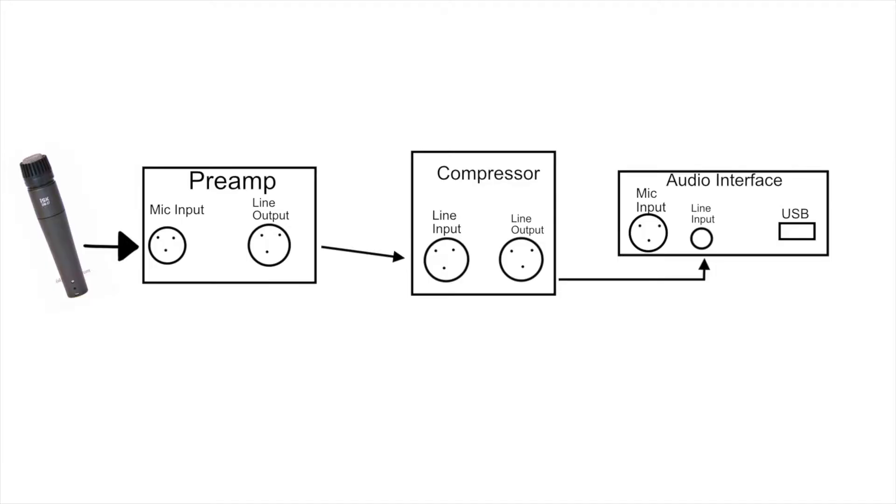If you have an external effects unit you want to use, it needs to receive a line level input and will send a line level output. So if you're recording with a microphone, you'll need to go from the microphone to the preamp, from the preamp to the effects unit, and then from the effects unit to the line input of your interface. Many interfaces have a send/return option so you can access the signal after it goes through the preamp, put your effects unit on it, and then send it into the converter.